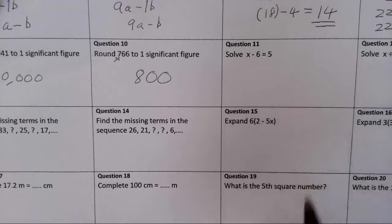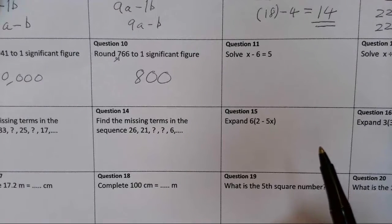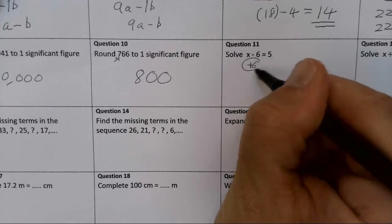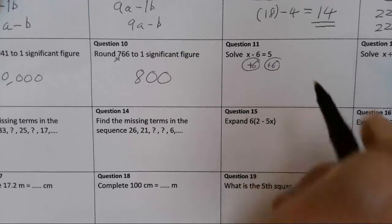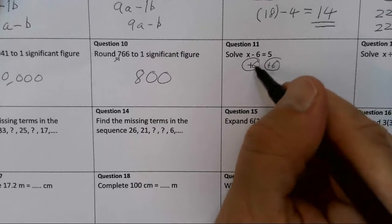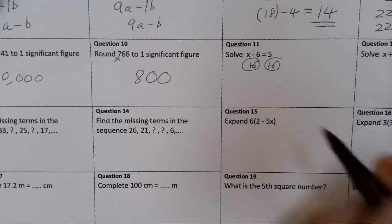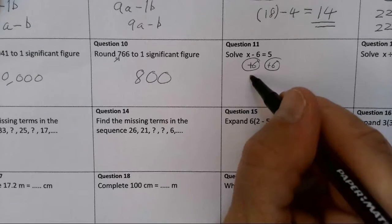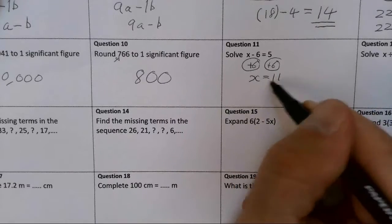A number take away 6 equals 5, so that number must be 11, because 11 take away 6 is 5. If I add 6 to both sides, that's how you would work it out. You do 5 plus the 6, so that would give you X equals 11.